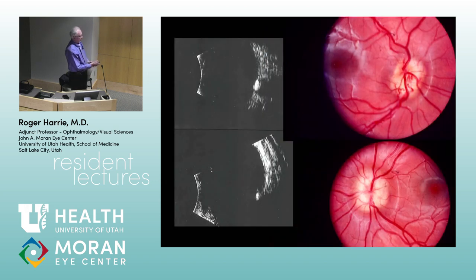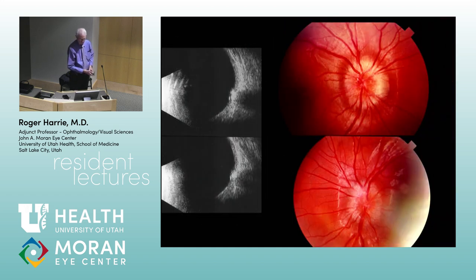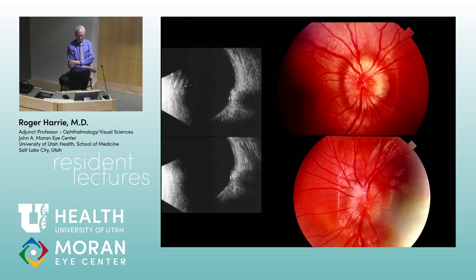Optic disc drusen: the frequency in the population is about 2 to 3% based on past studies. Genetically, it's probably a dominant trait with mixed penetrance. We've done some genetic studies — going to family reunions with ultrasound equipment to scan families. Usually if you find somebody with drusen, there's a good chance of finding a relative somewhere who has it — not always a direct parent but an uncle or cousin. We haven't found the gene yet but are still looking.